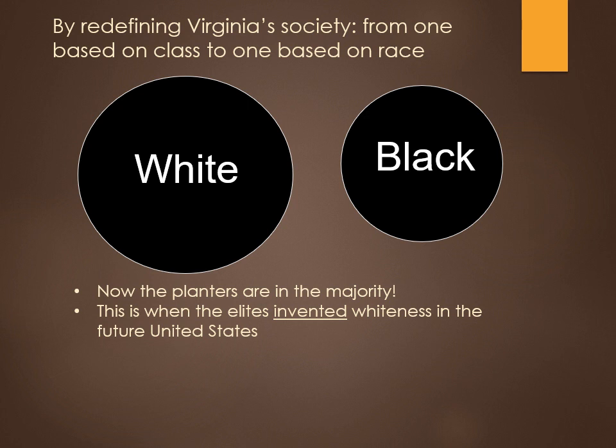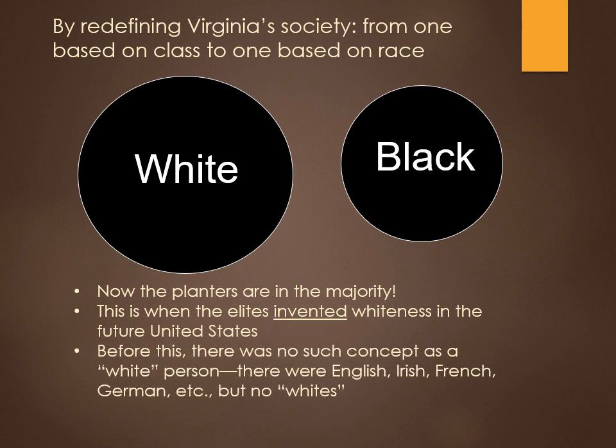You might think whiteness goes back to ancient times — well, not the concept of whiteness. There were English, Irish, French, German, and so on; people were well aware of ethnicities like this, but they were not really focused on the concept of a white person. So in the 17th century, we have the invention of whiteness, and this served the interests of the elites extremely well.